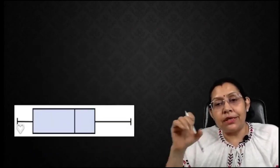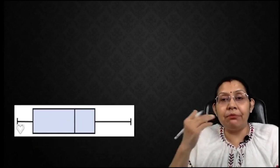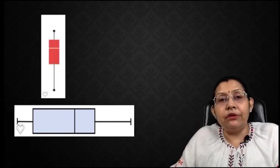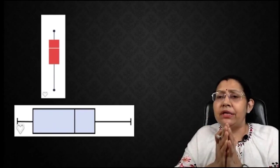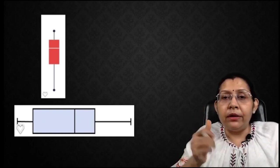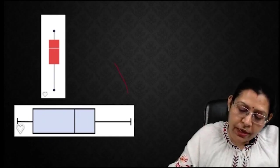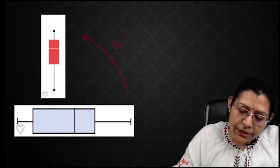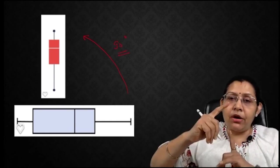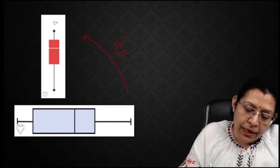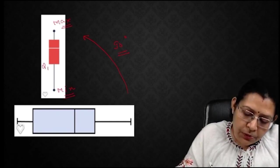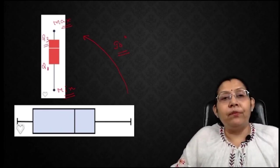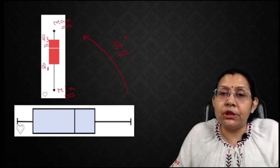Another point: many times the box and whisker plot is given in a horizontal direction, but sometimes the examiner can give this plot in a vertical fashion also. The rule of thumb is to imagine that this box and whisker plot has been rotated anticlockwise by 90 degrees. So the upper end will be the maximum values, the lower end will be the minimum values, the lower end of the box corresponds to the first quartile, and the upper end of the box corresponds to the third quartile. With this in mind, the interpretation is quite simple.